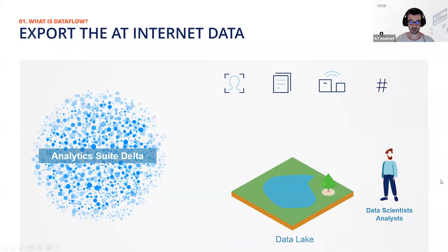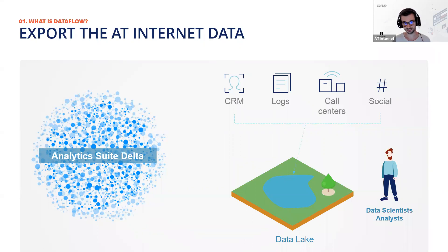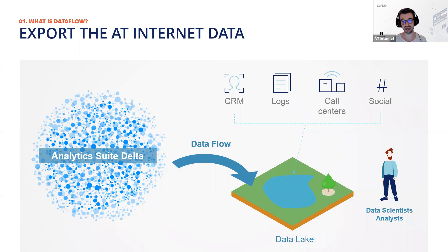Data Flow permits you to export all your raw data from AT Internet to a data lake, for example. When I say raw data, I mean all the non-calculated data. In Data Query on the suite you have both calculated and non-calculated data, but in Data Flow you only have raw data. Thanks to Data Flow you can create flows of data to export all your data model to a data lake, and then cross that data with other types like CRM logs, call center data, or social media. Your data scientists will be able to analyze and work with it.